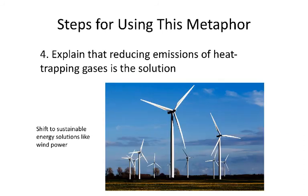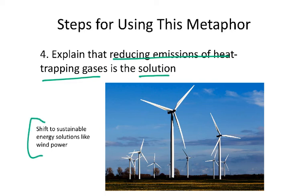The last part is really important because we don't want to leave people thinking they're helpless. We always want to explain that the solution is to reduce emissions of our heat-trapping gases. One of the main solutions that will help reduce CO2 emissions is shifting to sustainable energy solutions like wind power. This image shows a wind farm, which is a sustainable alternative to burning fossil fuels. When you're ending use of that metaphor, always make sure you talk about a possible solution to the problem.